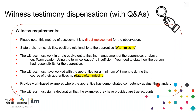The witness testimony has a Q&A session around it and is a direct replacement for the observation — the apprentice would not do both. The witness testimony should state the name, job title, and position of the witness, typically a line manager from the employer's side. It must state the witness's relationship to the apprentice — this is often missing from the documentation, so it's really important to include it.